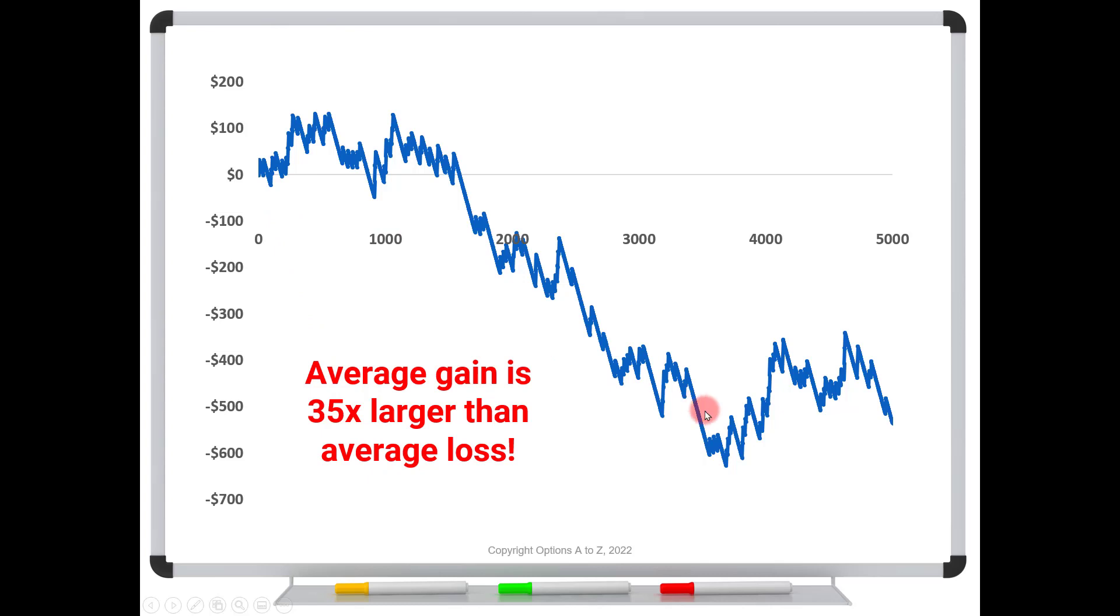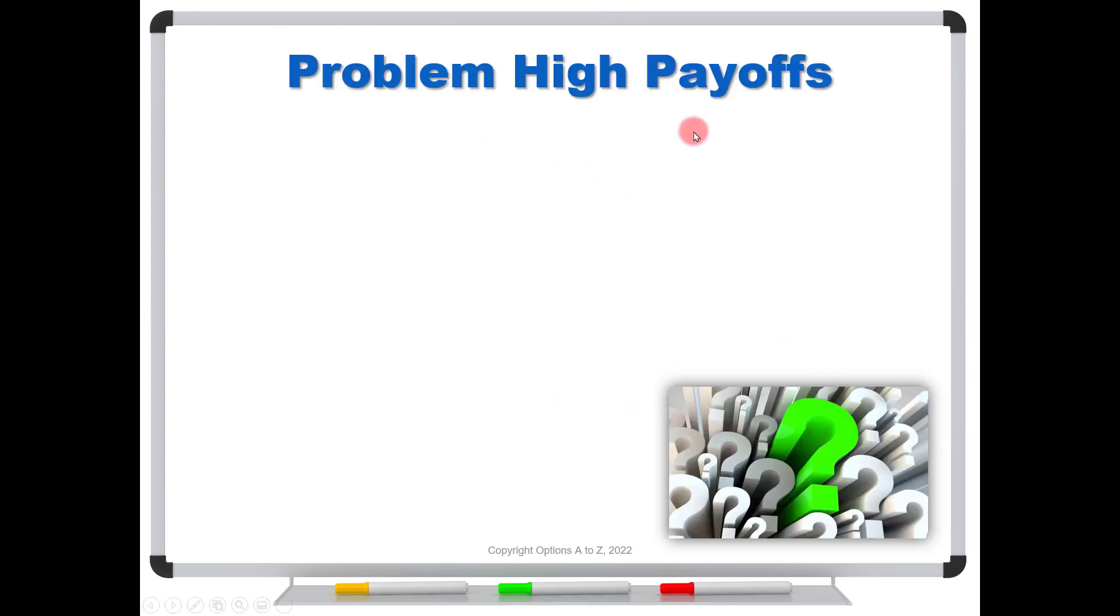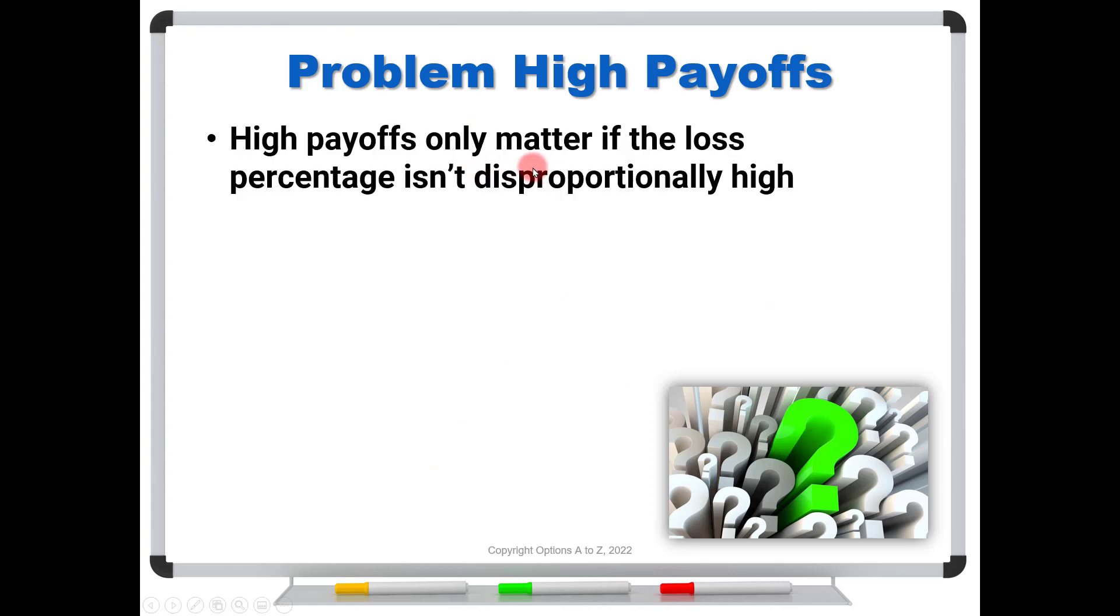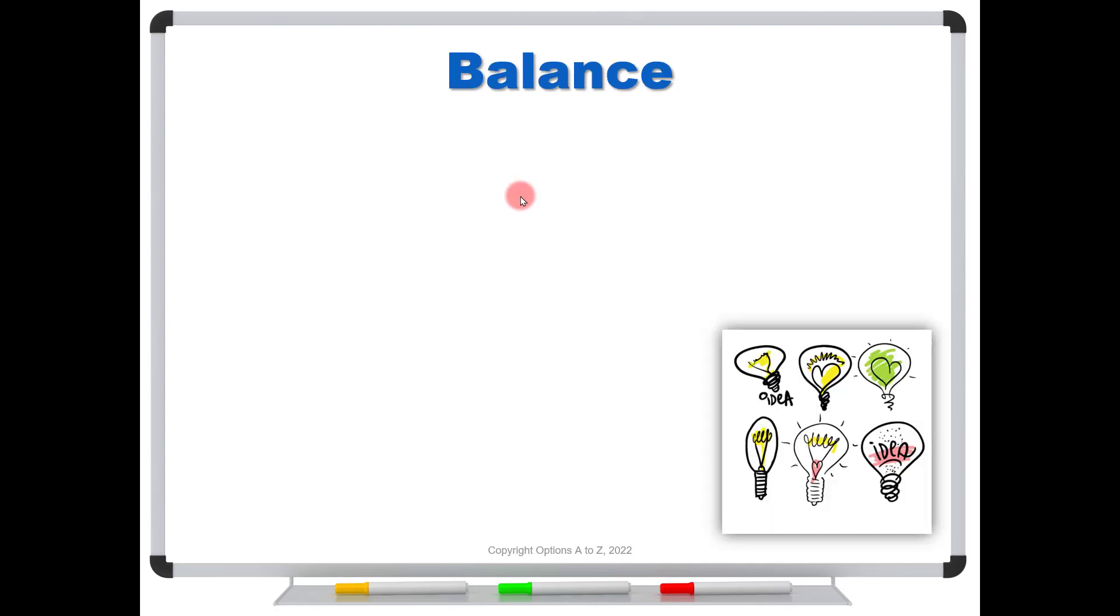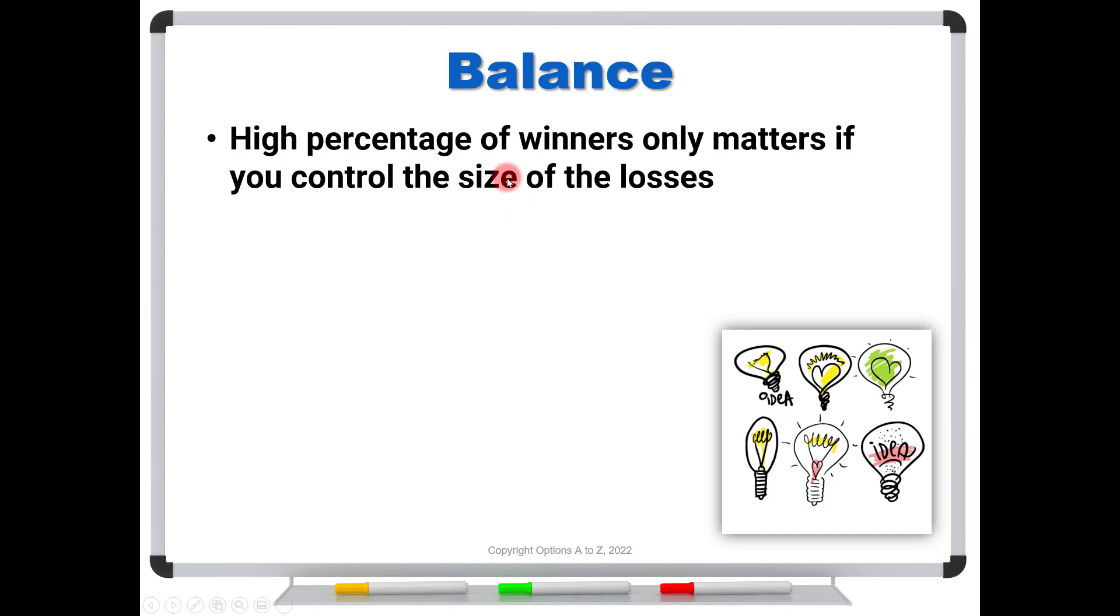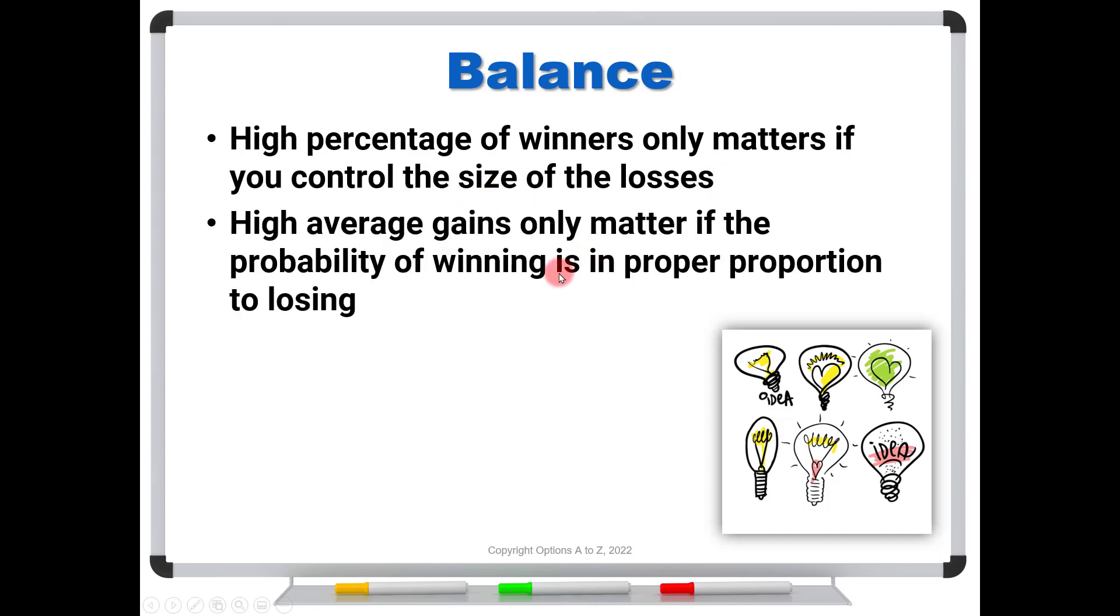It's because you have a favorable payoff, but you have unfavorable probabilities. So in this case, the problem with the high payoffs is that the high payoffs only matter if the loss percentage isn't disproportionately high. So again, it is about balance. A high percentage of winners only matters if you control the size of the losses. And high average gains only matter if the probability of winning is in proper proportion to losing.